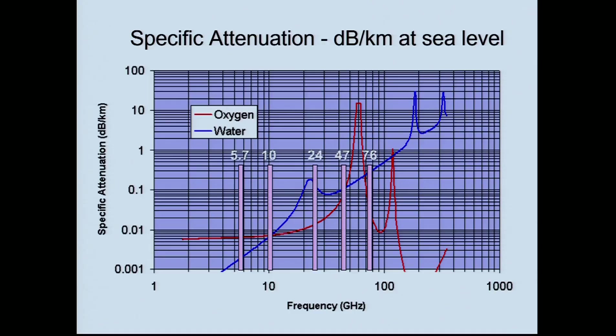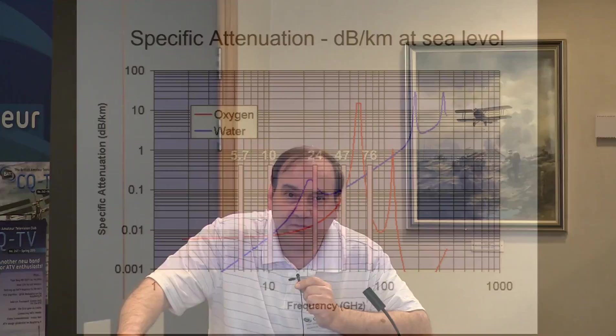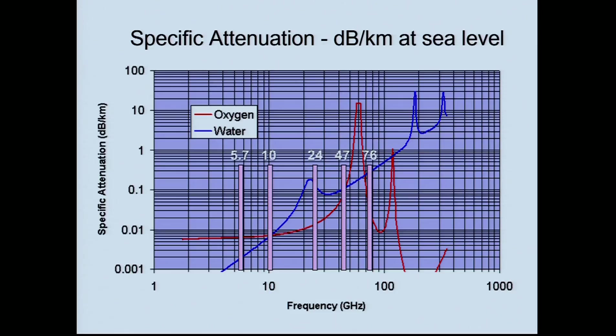The attenuation does go up with frequency, but the bands are particularly positioned to avoid the worst peaks — we don't put a band right in the middle of the great big oxygen peak at 57 gigahertz. You can do things about water vapor though, because the amount of water vapor in the atmosphere varies with height, season, and temperature. If you can find a very cold, dry day, that's the time to be making 24 gigahertz DATV DX records.